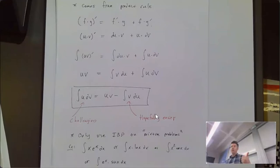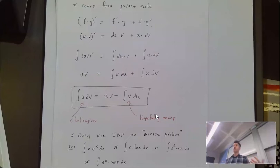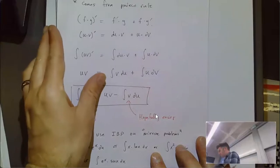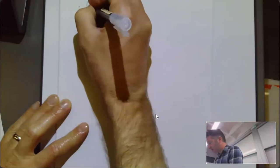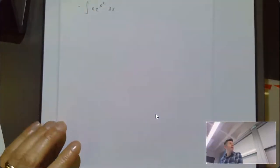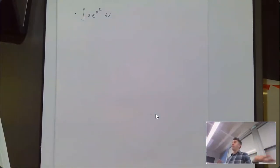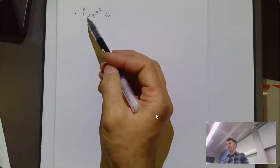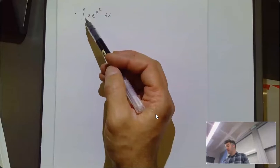You should first check to see if you can do u-substitution. For example, if I was going to integrate x·e^(x²), I might think that looks like integration by parts because there's a mixture — an algebraic thing times an exponential thing.